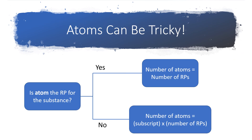Atoms can be tricky, so hopefully this flow chart helps you navigate that a little better. If you're asked to find atoms, ask yourself: is atom the representative particle for the substance? If yes, then the number of atoms equals the number of representative particles. But if the atom is not the representative particle — in other words, you're dealing with molecules or formula units — then to find the number of atoms of that element, multiply the subscript on that element in the formula times the number of representative particles.